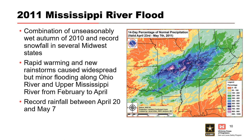What followed was a series of heavy rain events from February to April, resulting in widespread but minor flooding along the Ohio River and upper Mississippi River, with several areas of the Mississippi River Valley in flood stage beginning in late February. Between April 20th and May 7th, record rainfall resulted in portions of Missouri, Illinois, Indiana, Kentucky, Tennessee, Mississippi, and Iowa receiving 400 to 1,000 percent more rainfall than average. This caused the Mississippi River to rise to levels not seen since the floods of 1927 and 1937.